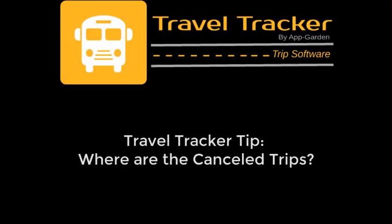Hello! Today's travel tracker tip is for the transportation administrator who is looking for canceled trips. When a trip request is canceled because the trip perhaps is not going to go, or maybe it did not go and you need to cancel the trip, you use your cancel trip button in the trip request form, but once you cancel the trip it's no longer visible in that view of all of your trip requests.